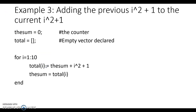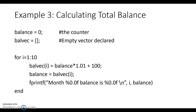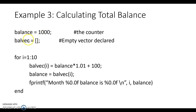Now let's look at our original problem: calculating the total balance. I'm going to initiate a variable called balance set to $1,000 with a semicolon, and I'll create an empty vector called balvec using empty square brackets. The balance variable will keep track of the most current balance, while balvec will keep track of all the historical balances over, in this case, the first 10 months.